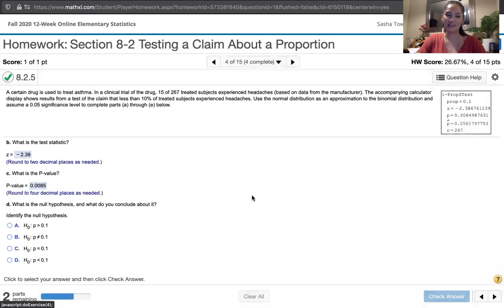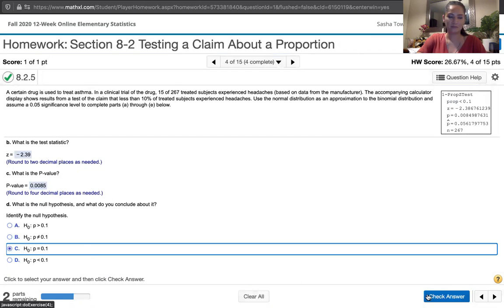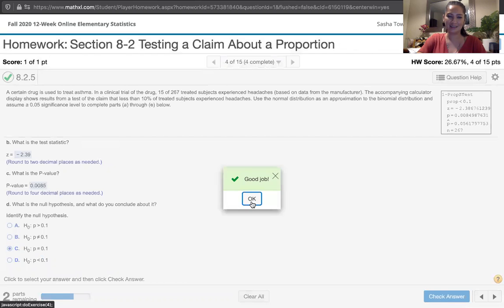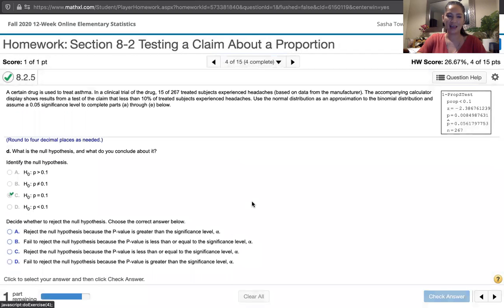And then they ask us for the null hypothesis and what do we conclude about it. Well, our null hypothesis is going to look exactly like that claim, which is right here. P is less than 0.1. But instead of having a less than sign, you're going to have an equal sign. So we'll have p is equal to 0.1. And notice that that's the only one with an equal sign on our list. So that's got to be it.